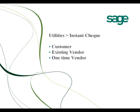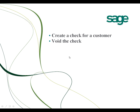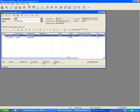You can do an Instant Check for a customer, for an existing vendor, or for a one-time vendor. I'm going to show you how to create a check for a customer and how to void the check if you want to. Let's take a look at this example: this customer has an invoice of $100 and he made a payment of $200, so now he has a credit of $100 in his account.